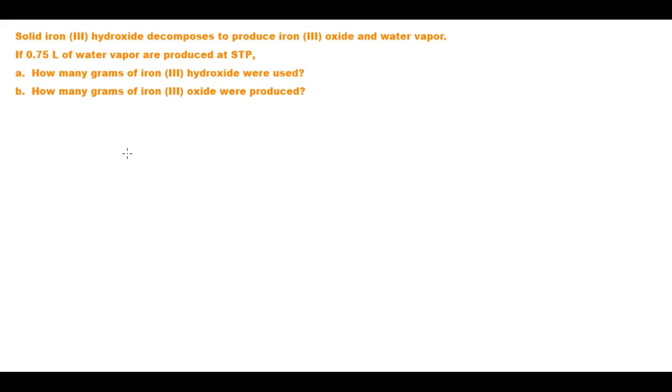First off, we're going to need an equation. So you have solid iron 3 hydroxide. Iron 3 hydroxide will be Fe(OH)3 because remember hydroxide is only one negative. Iron 3 plus so we need three hydroxides.